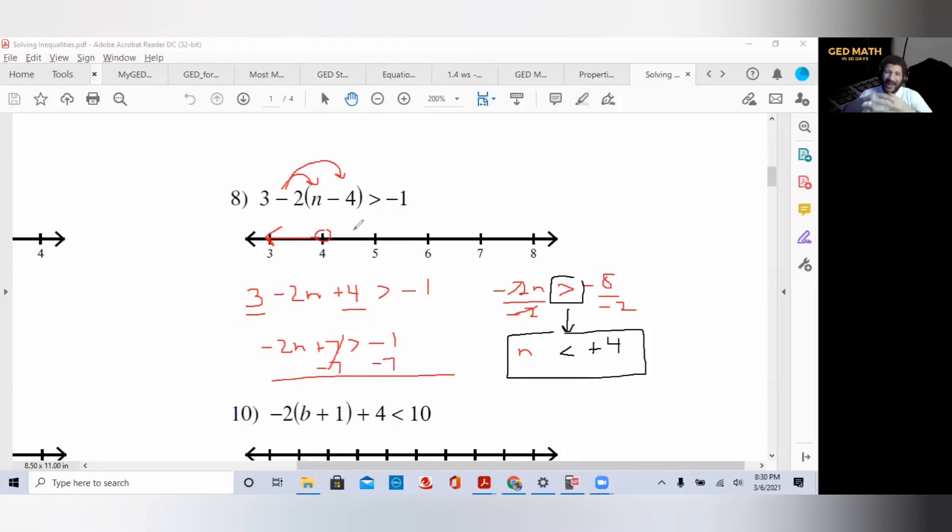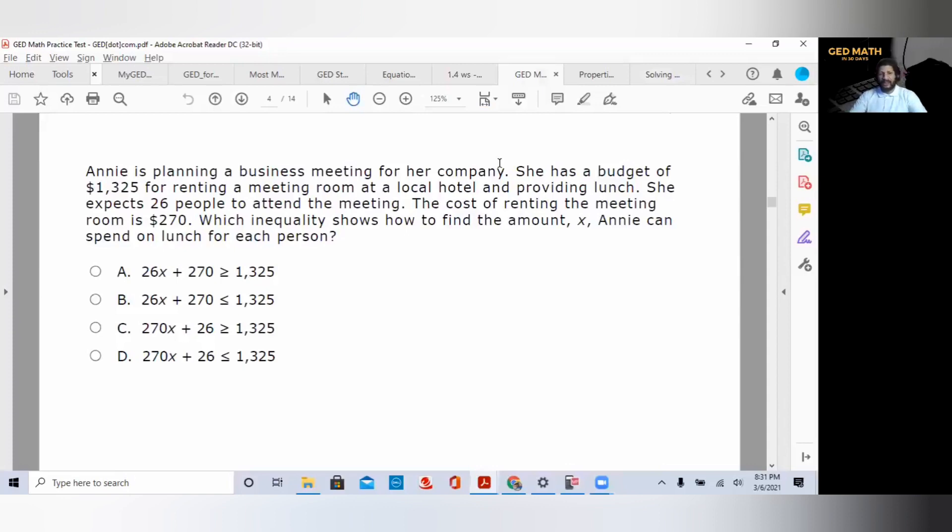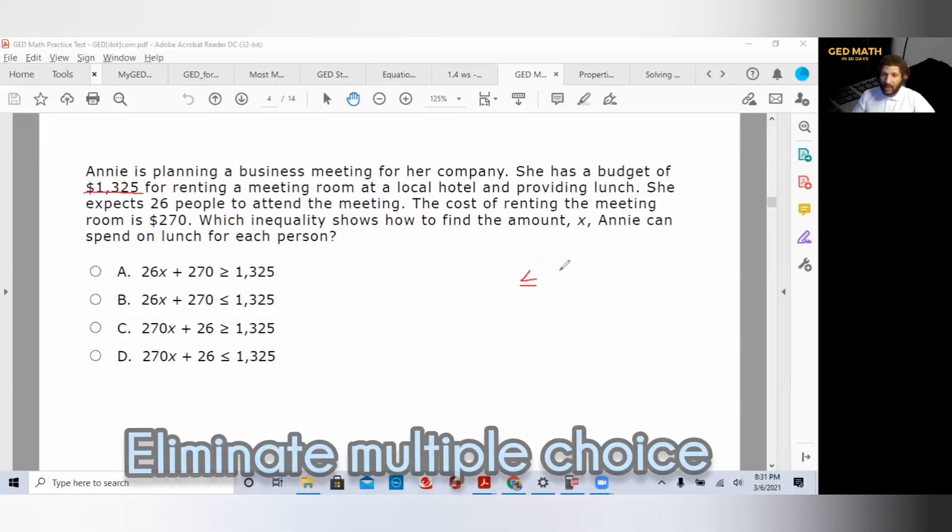We have three examples, go back and practice. I'm about to show you the type of inequality you might see on the GED exam. These examples are from either the study guide or from the GED.com website. The problem says: Annie is planning a business meeting for her company. She has a budget of $1,325 for renting a meeting room at a local hotel and providing lunch. She expects 26 people to attend the meeting. The cost of renting the meeting room is $270. Which inequality shows how to find the amount x Annie can spend on lunch for each person?